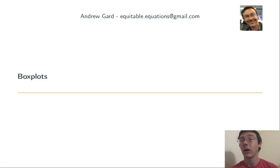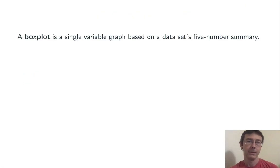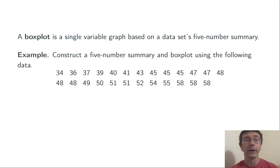Hey everybody. Today we're talking about box plots, also known as box and whisker plots. A box plot is yet another way of displaying a single variable data set. This one is based on the five-number summary. The easiest way to understand them is just to do an example or two. So let's jump right in.